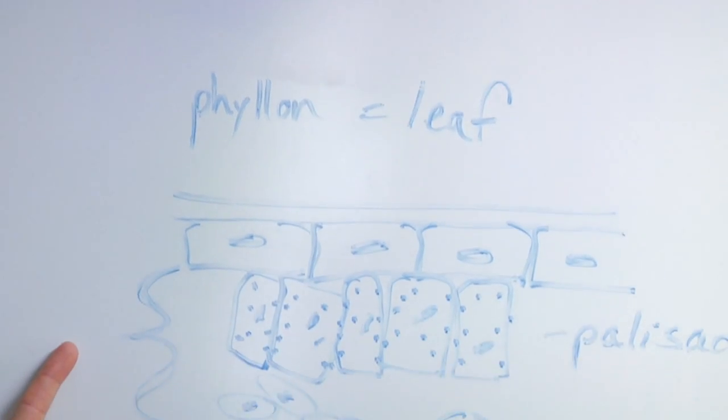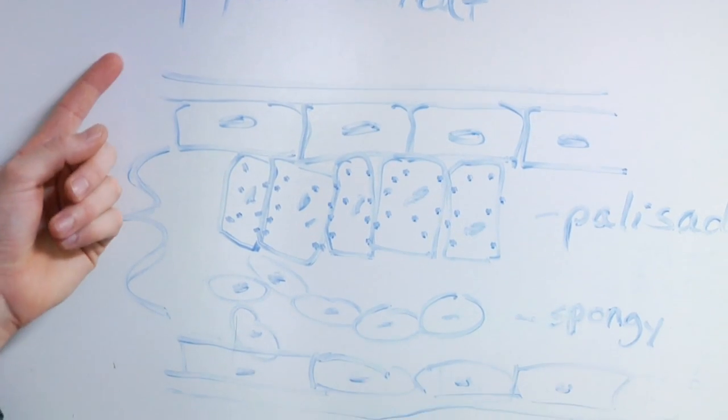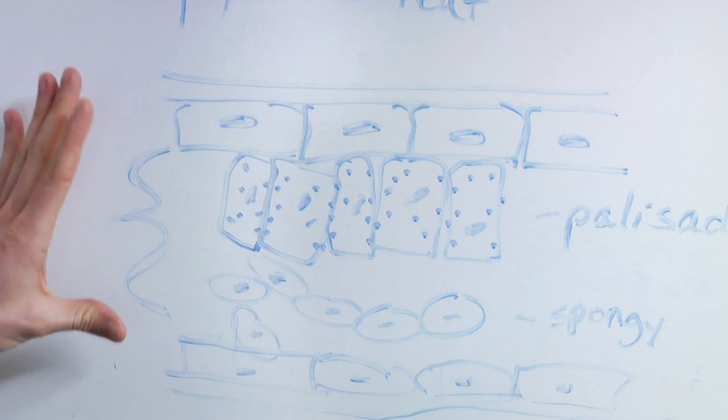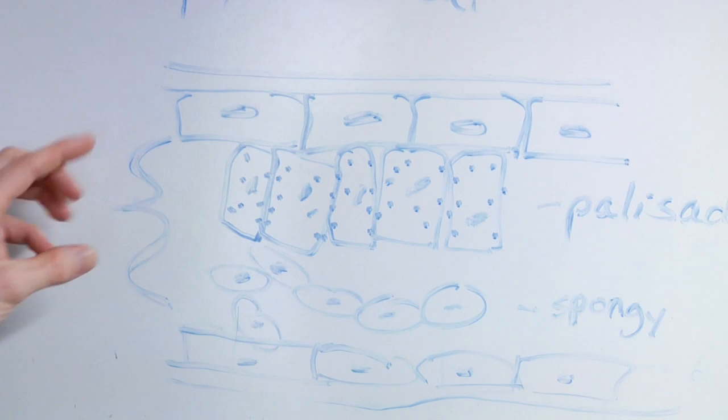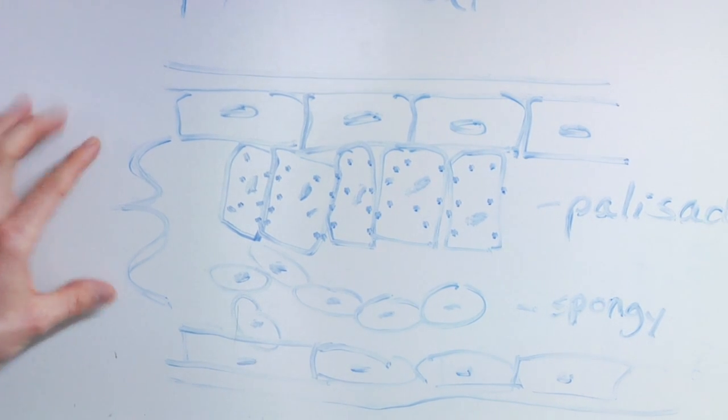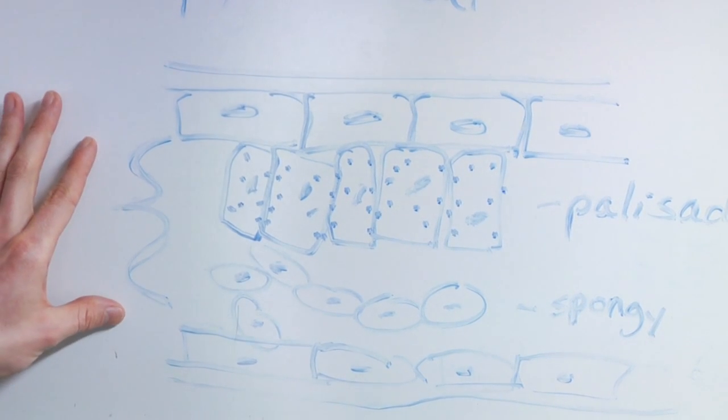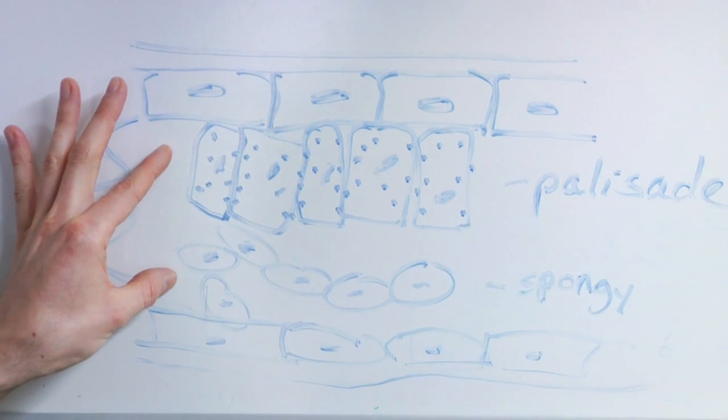If you look at this lovely diagram I have drawn here, this is a cross section of a leaf, so this is the top, this is the bottom. This top layer is just the cuticle and your epidermis, but now this middle section here is what we're really interested in. This is the mesophyll, these two types of cells.